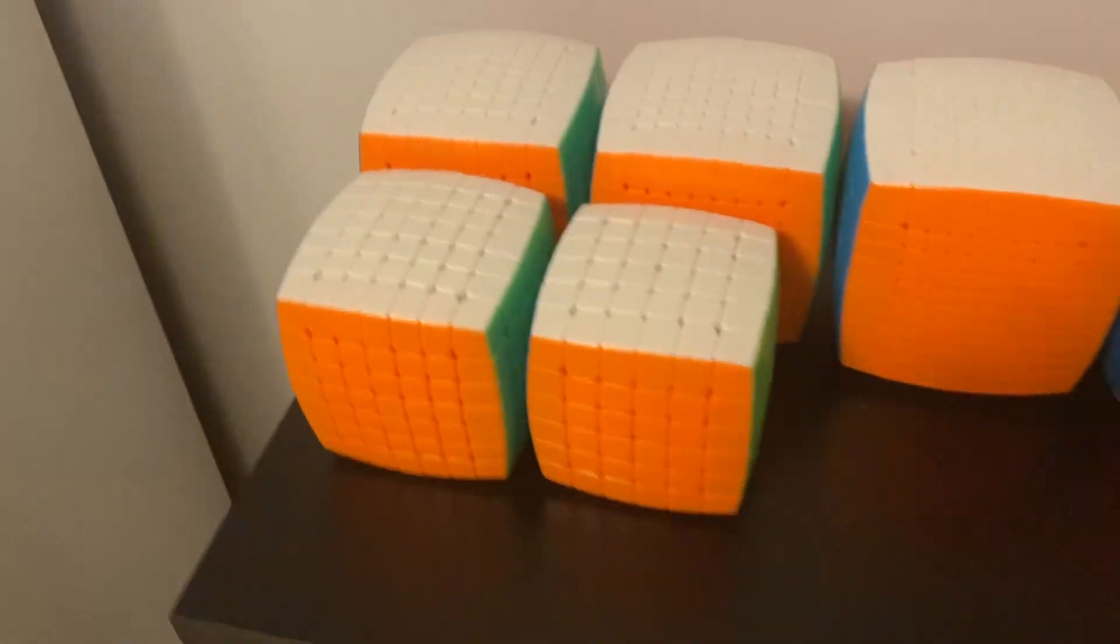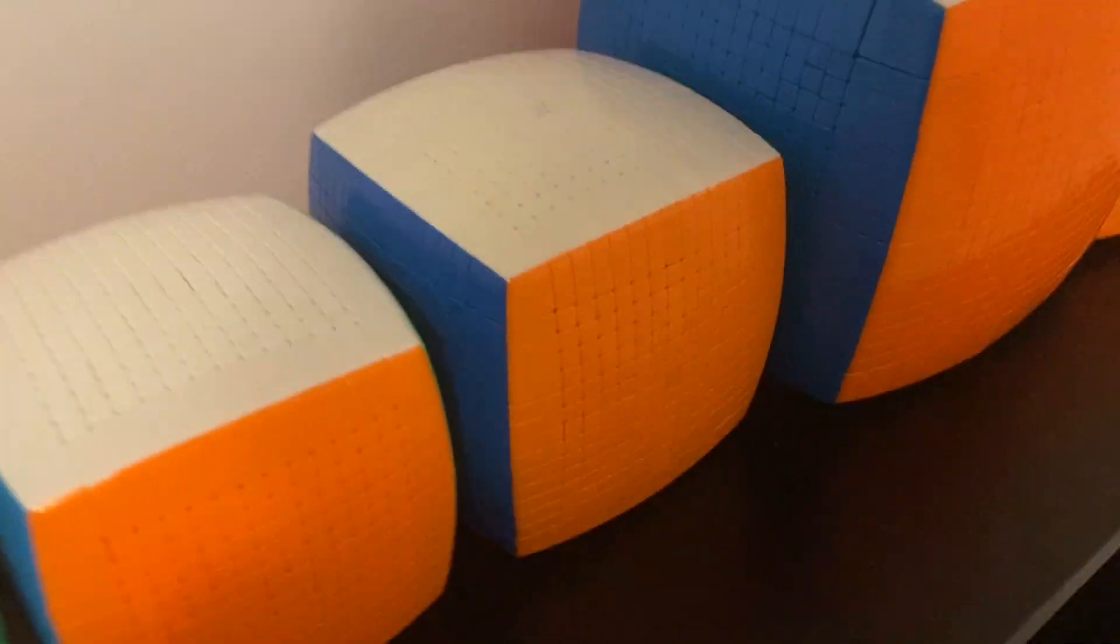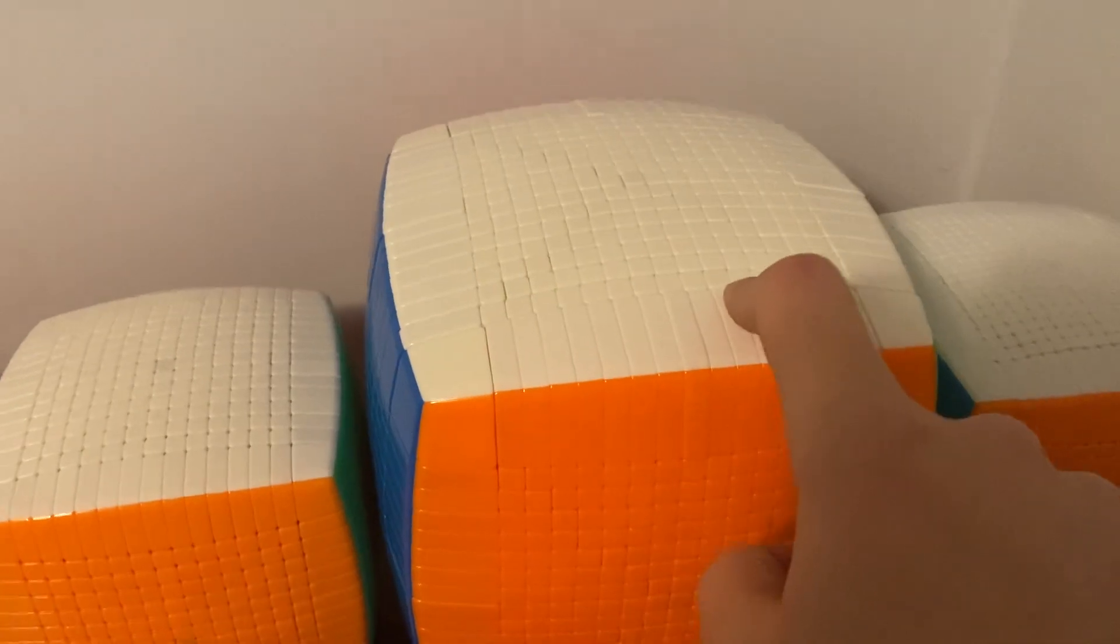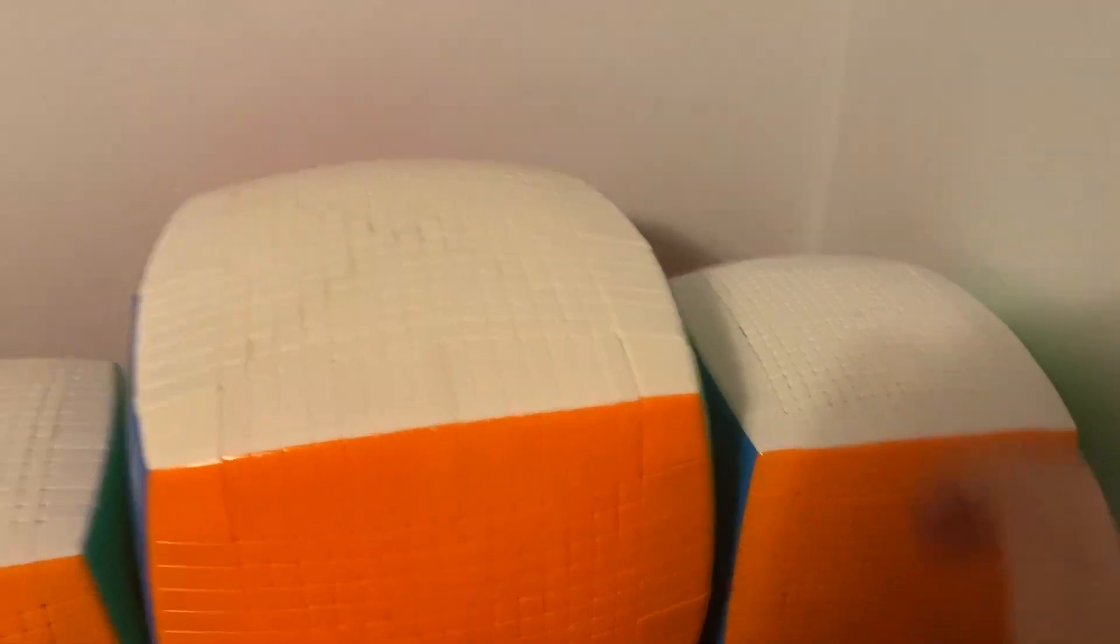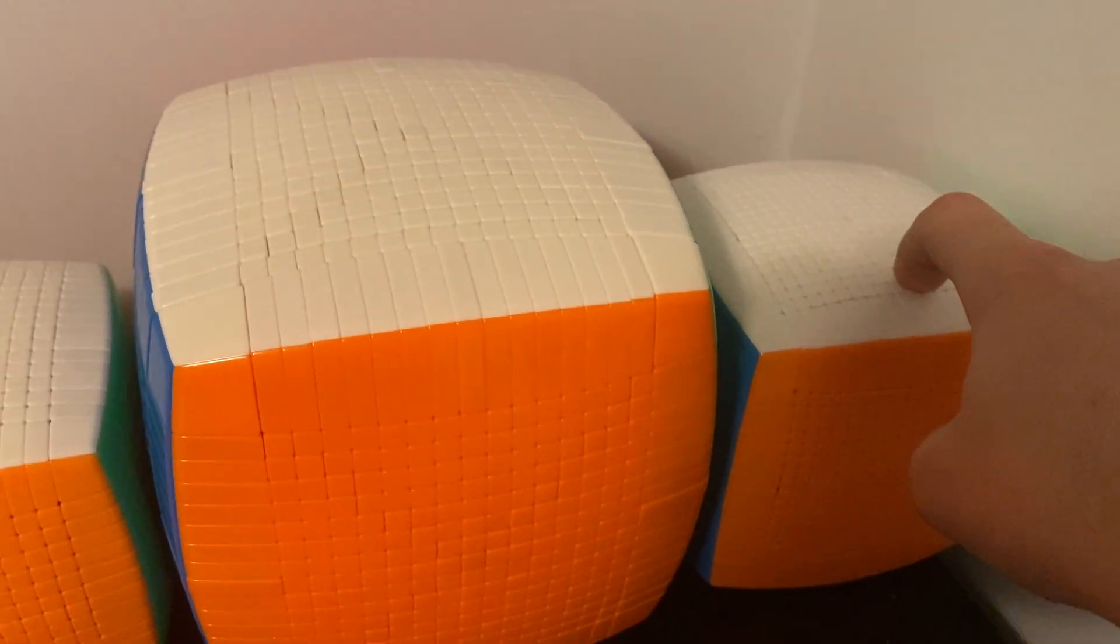And then up here are the newer big cubes. Got the Xingxiao pillage 6x6, all the way up to 14x14. And then we got the Moyu 15, Yushin 17, and Xingxiao 19, which currently is my biggest n-by-n cube as far as number of layers.